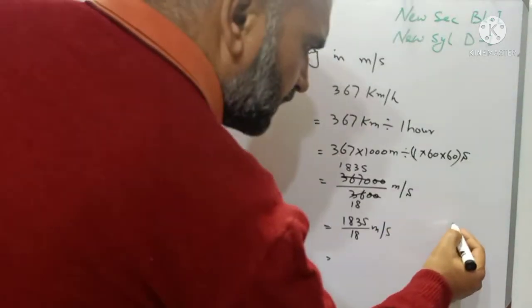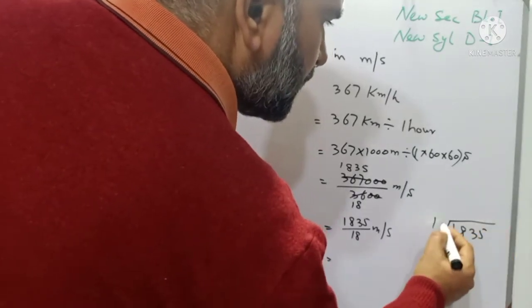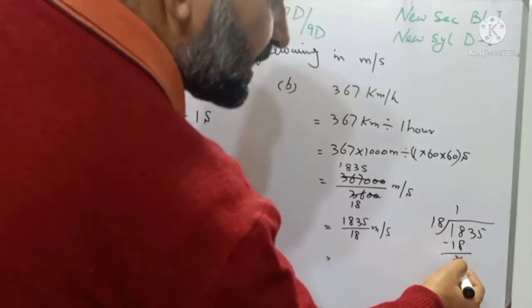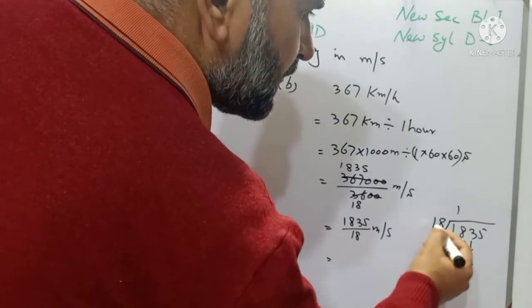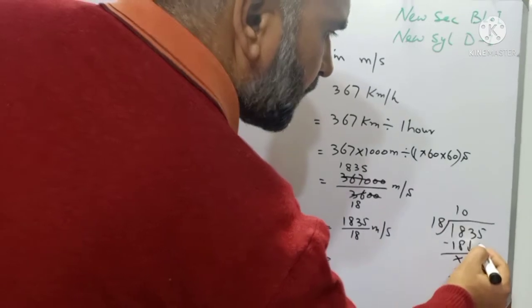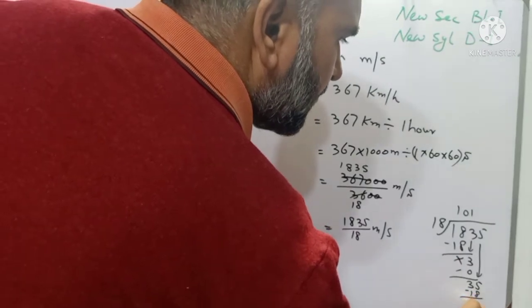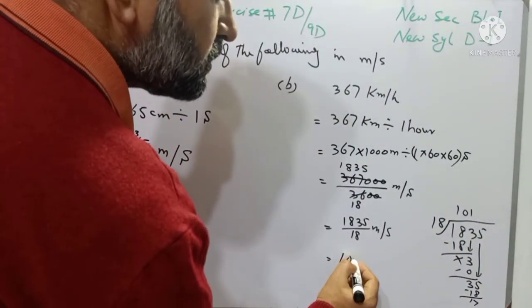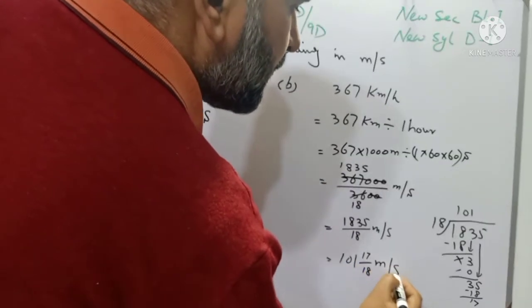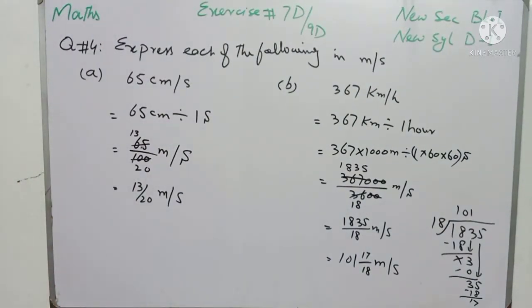Now we will divide 1835 with 18. 18 ones are 18, subtract 18 from 18, nothing remains; drop the next digit. 18 zeros are 0; drop the next digit 5. 18 ones are 18, and the remainder is 17. So the answer is 101 and 17 over 18 meter per second. That is part B of question number 4.